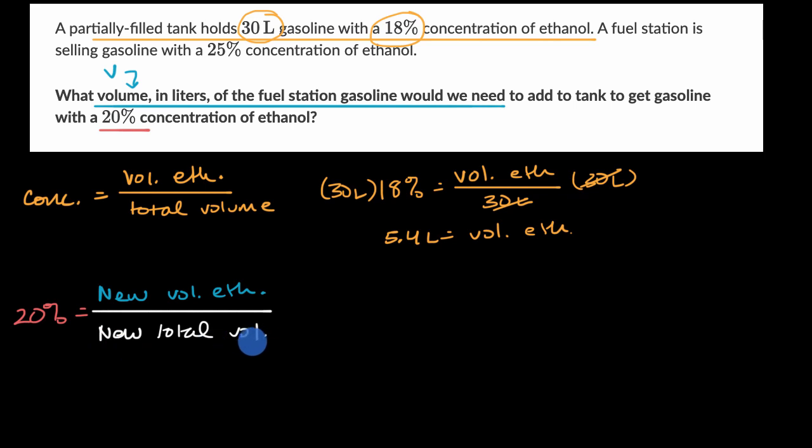Now what's going to be our new total volume? We're starting with 30 liters, and then we're adding V liters to it. So our new total volume is going to be the 30 liters we started with, plus the V liters that we're adding. And what's our new volume of ethanol? Well, it's going to be the ethanol that we started with, the 30 liters times 18%, which is 5.4 liters, 5.4 liters, plus the volume of ethanol we're adding. Well, to figure out the volume of ethanol we're adding, we just have to multiply the volume we're adding times the concentration of that volume. So it's going to be 25%, that's the concentration of the gas that we're adding, times V, plus 0.25V.